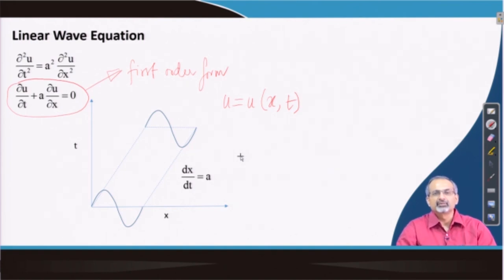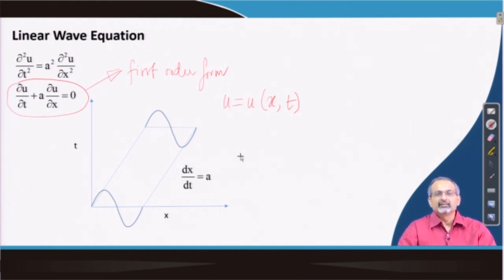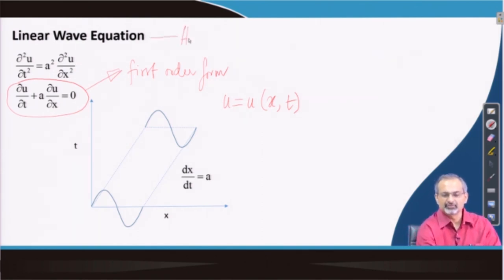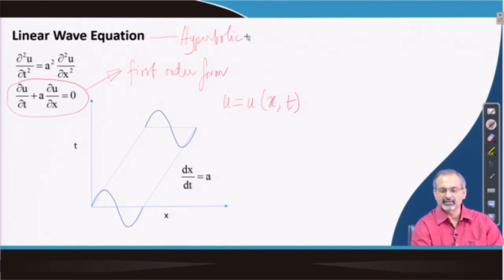In elliptic partial differential equations, we talked about steady state or equilibrium solutions of problems where there is diffusion phenomena. And again in parabolic partial differential equations, we talked about transient diffusion — that means we were tracking the time history of the diffusion phenomena. Whereas here, when we discuss the linear wave equation, we recall that this type of equation falls in the category of hyperbolic partial differential equations.